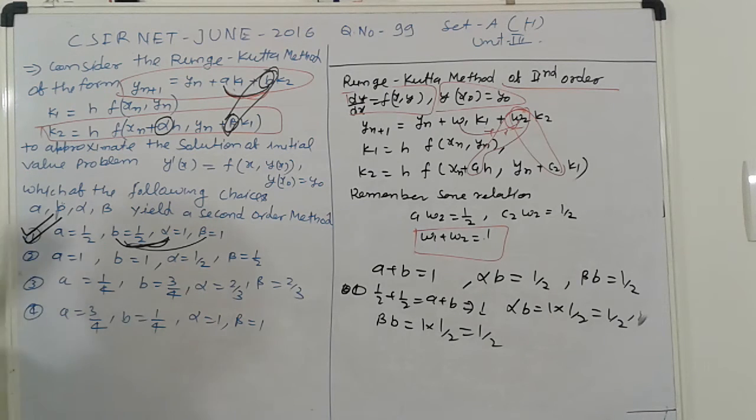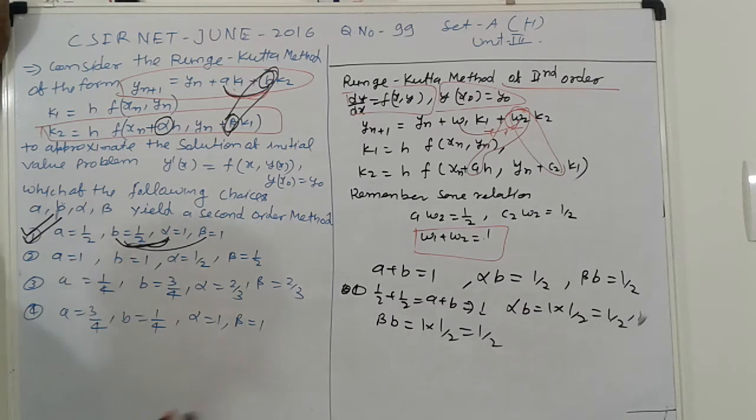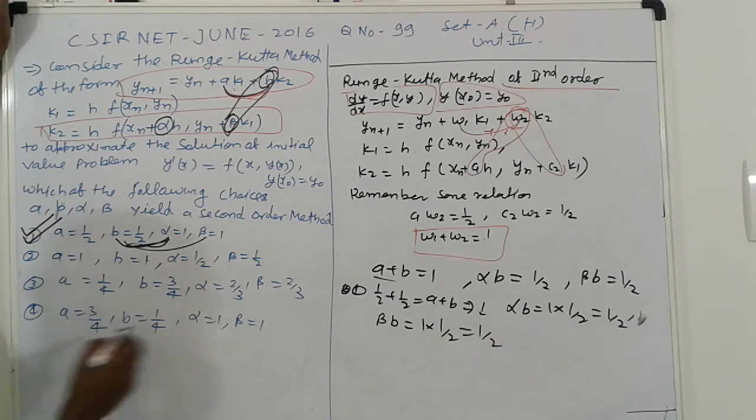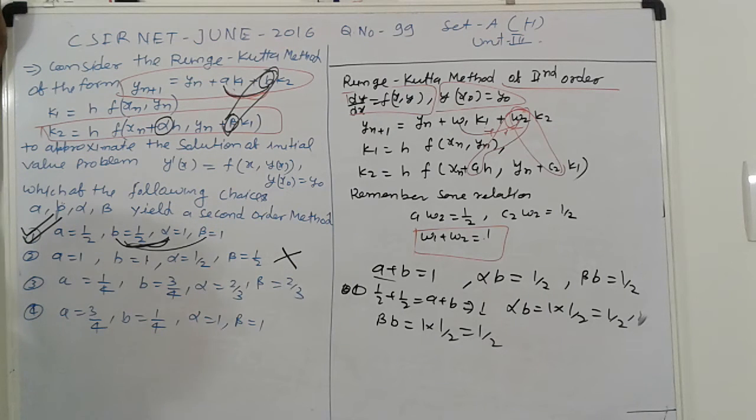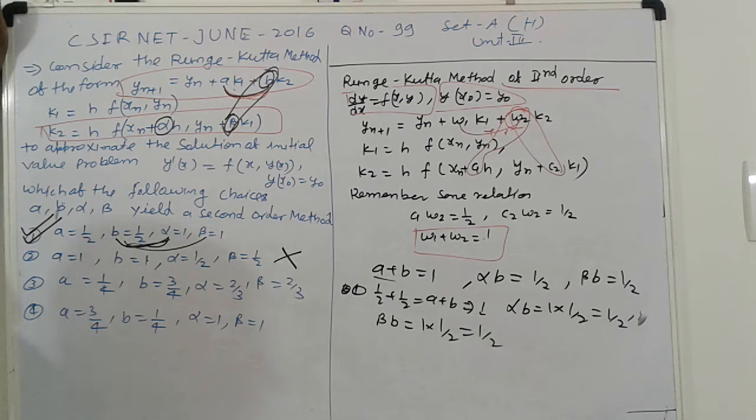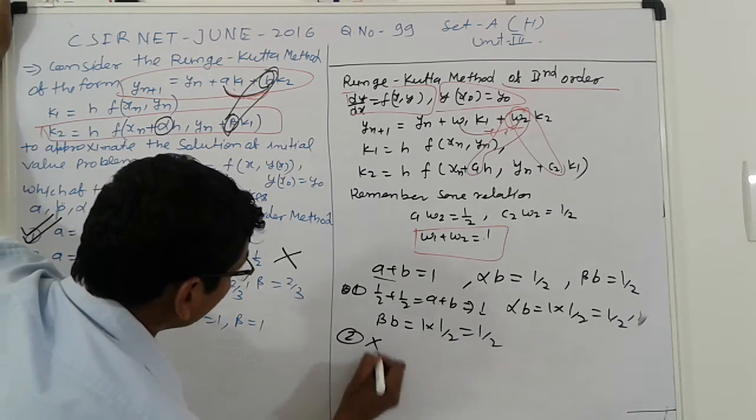Next, go to the second. A plus b equals 1. Sum of this, a+b equals 1. But here a+b equals 2, so that case is here. Not satisfied the conditions. The second option is wrong.